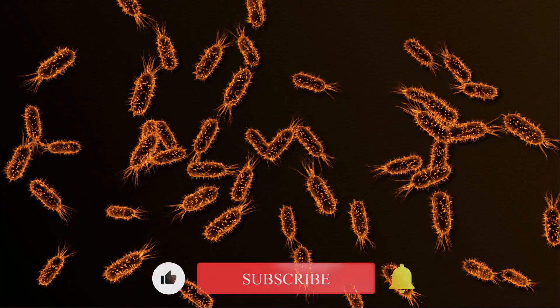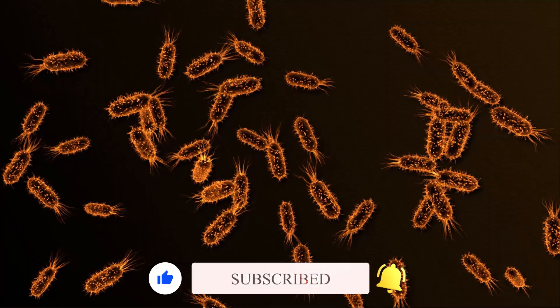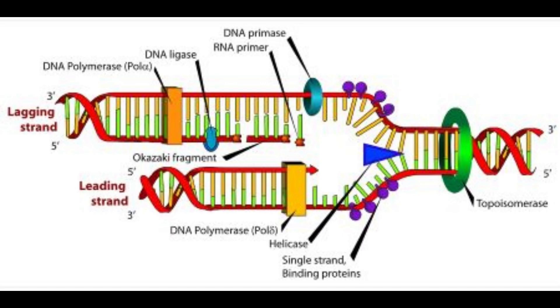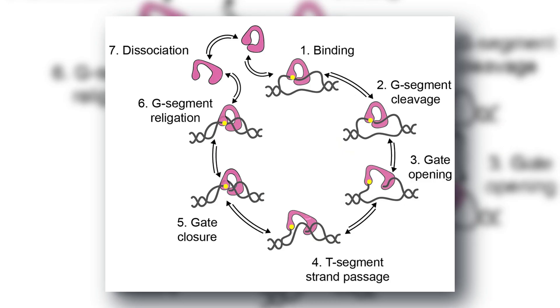Bacteria have no nucleus, but their DNA is still tightly managed. Their chromosomes are usually circular and coiled like springs. Enzymes called topoisomerases cut and twist the DNA, preventing dangerous tangles. This supercoiling is vital for survival in harsh environments.